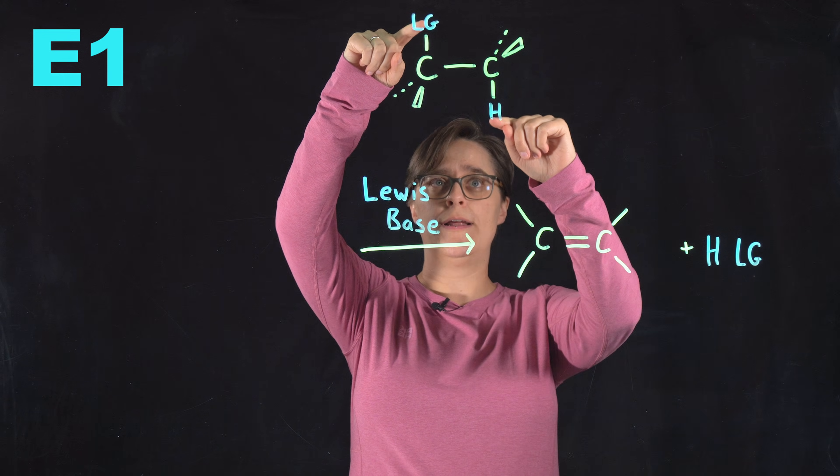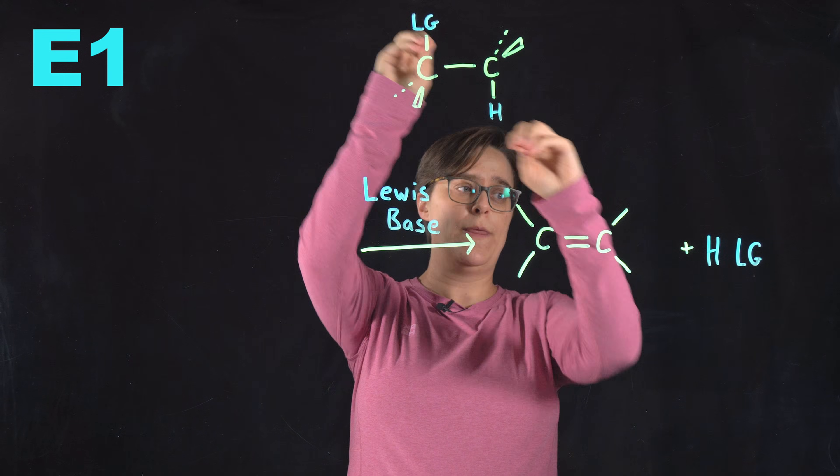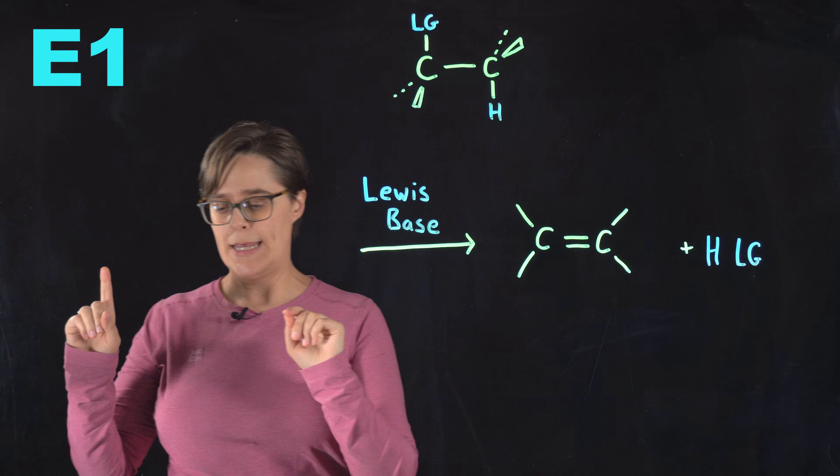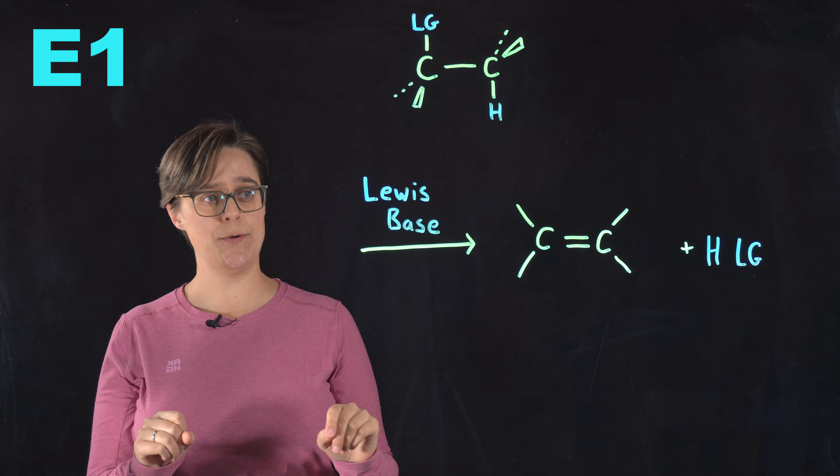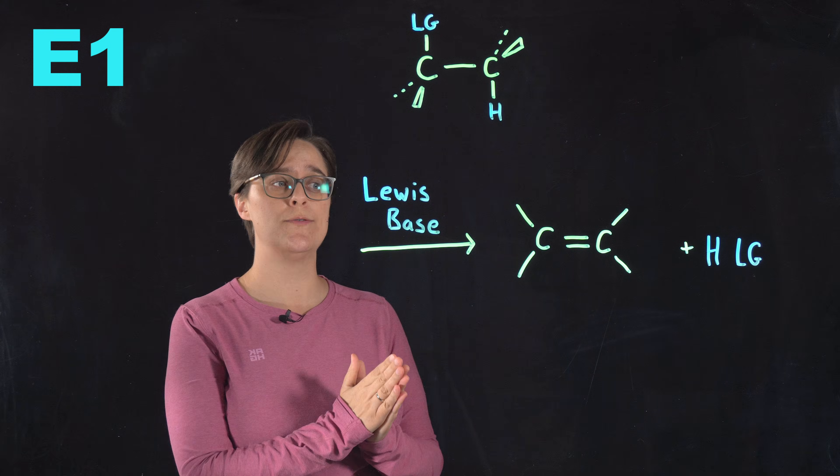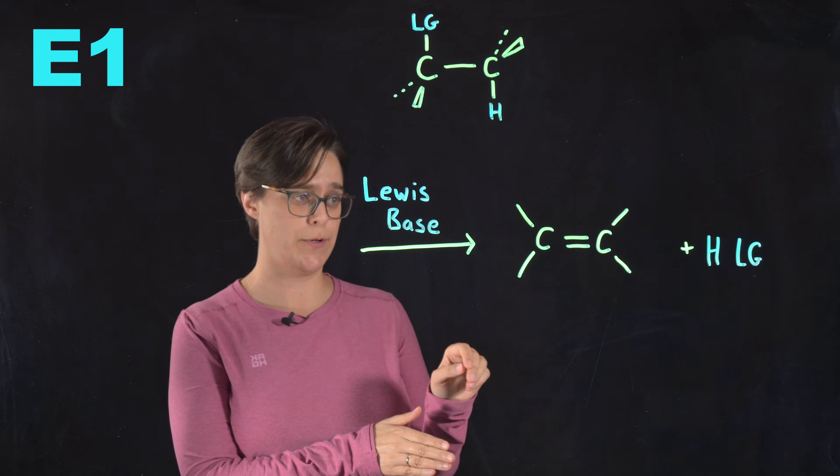and a hydrogen on neighboring carbons. They both break off and a new double bond is formed between those carbons. E1 does need to occur in the presence of a Lewis base, where E2 needed a strong base. But because they are so similar, people get these mixed up all the time.